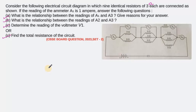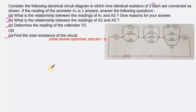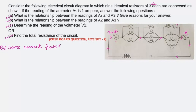We have three ammeters A1, A2, and A3. The current through ammeter A1 is one ampere. That one ampere current will flow through the entire circuit because it is in series, so the current through A3 will also be one ampere. Therefore, the same current flows through A1 and A3 as they are in series.